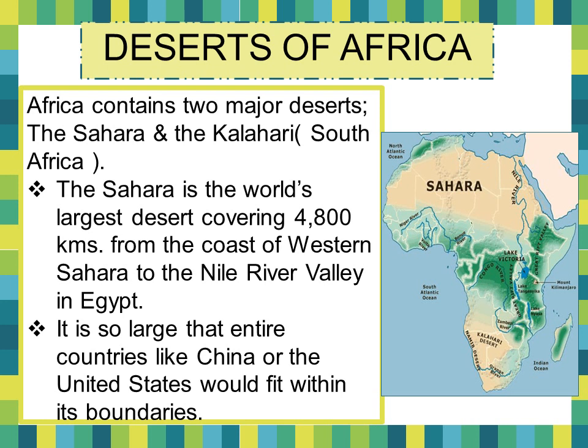Looking at the Sahara Desert, you can find the Nile River, and on the western side, the western Sahara region near the Atlantic Ocean. The Sahara is so large that entire countries like China or the United States of America would easily fit within its boundaries. The Kalahari Desert, as you can see in the map, is clearly not as large in size.